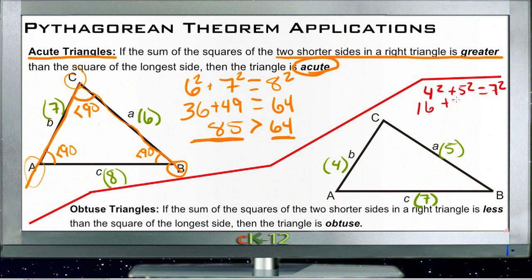we get 16 plus 25 equals 49. Obviously that's not correct, but we can see 41 is less than 49.